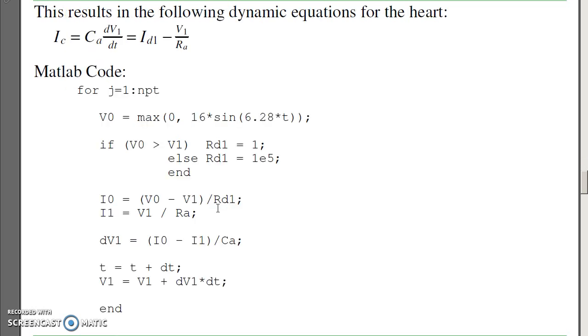That results in the following dynamic model for the heart. The differential equation that describes that circuit is the current of the capacitor is C dV/dt. That's the current from the left ventricle, current through the diode, minus the blood going through to the body.